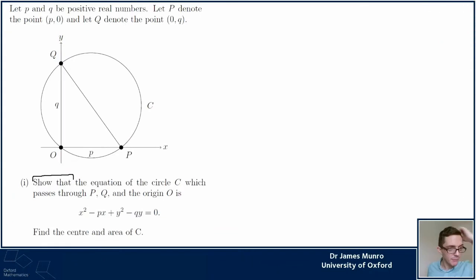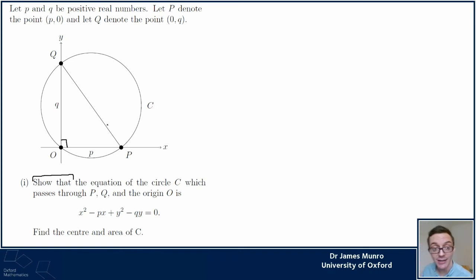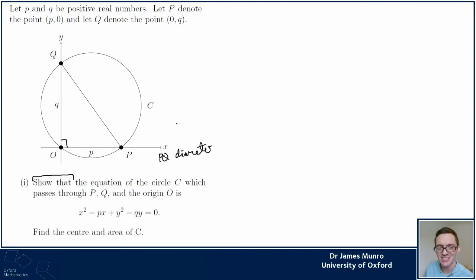People have spotted that there's a right angle here. Where's the right angle? This is a right-angle triangle, and a right angle in a circle means that line PQ is the diameter. Once we know the diameter, we know where the center is - the center is the midpoint of PQ.